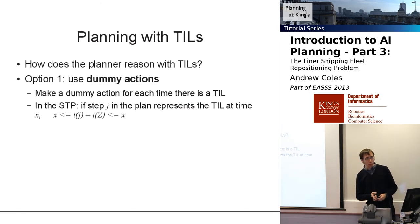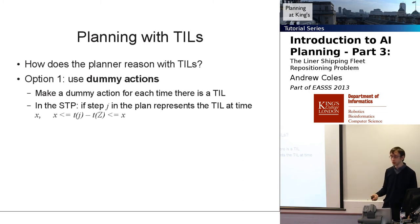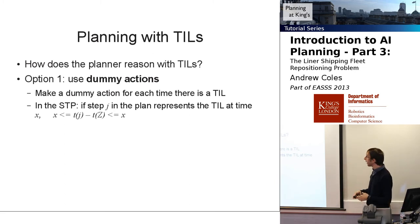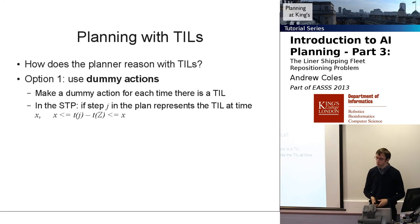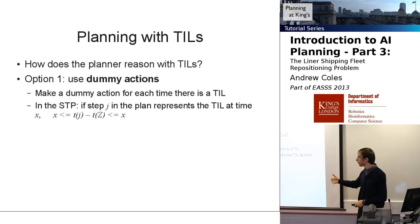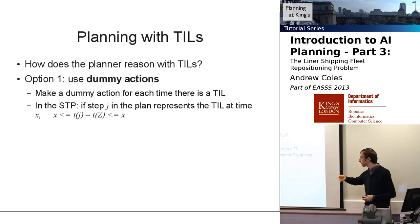How does the planner actually reason with timed initial literals? One option is to reduce it to the problem you've already solved using dummy actions. You take your simple temporal problem and add a special action representing the timed initial literal at time 16. When that action goes into the simple temporal problem, the lower and upper bounds on its time are both x — so the amount of time between time zero and that step is exactly 16. The planner can't choose what these timed initial literals are; it must respect whatever time is assigned to them.